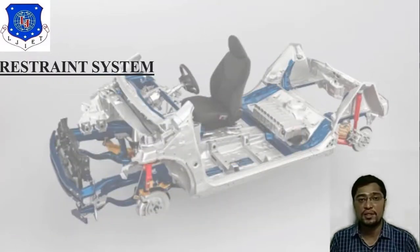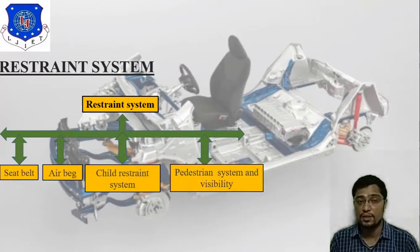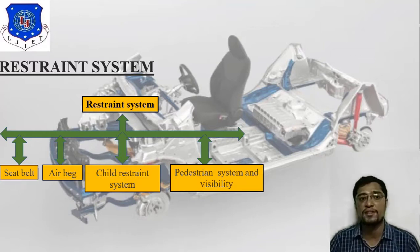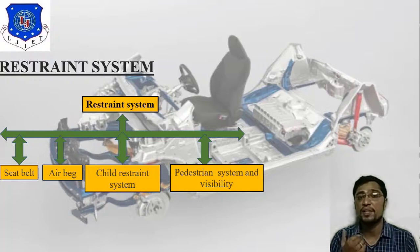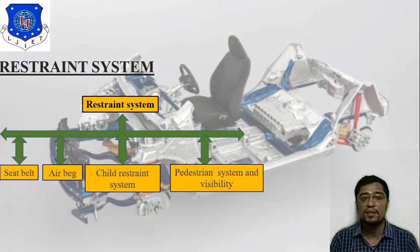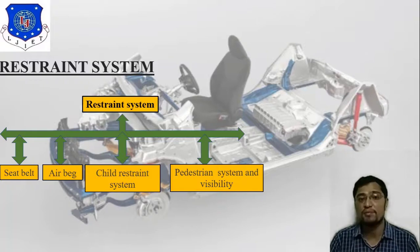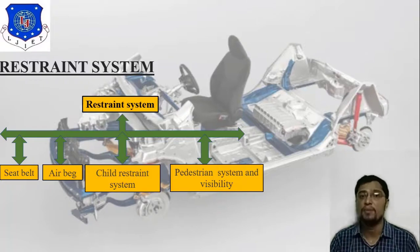Next is the restraint system. In this table I have attached four different examples: first, seatbelt; second, airbag; third, child restraint system; and fourth, pedestrian system and visibility. Let's move forward to discuss each one.